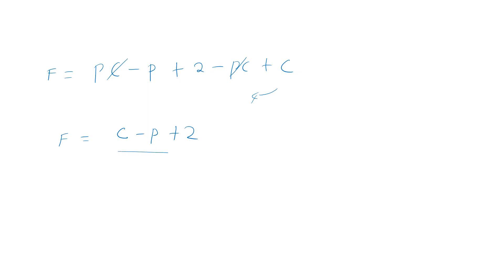This is how we determine the degree of freedom. Once we have this, we can calculate for various types of systems — a one-component system with one phase, two phases, or three phases. This is how we derive the equation for the phase rule, which is all about degrees of freedom.